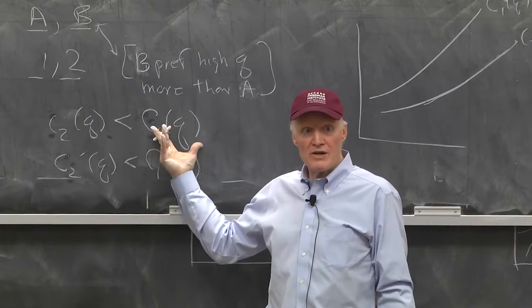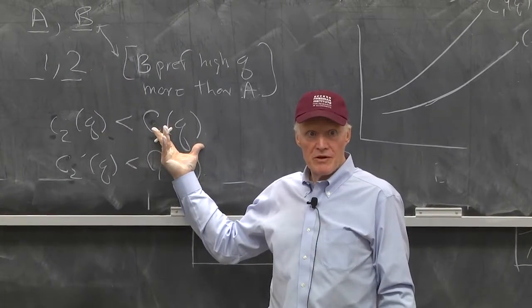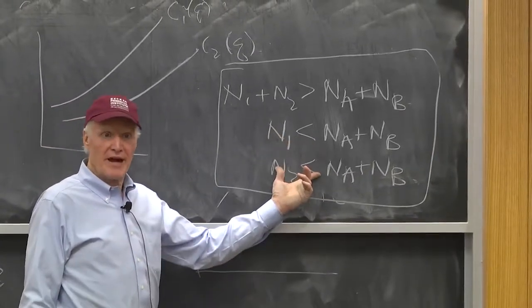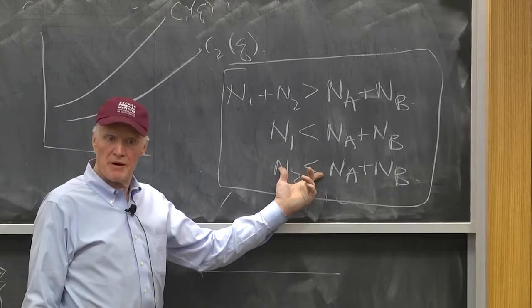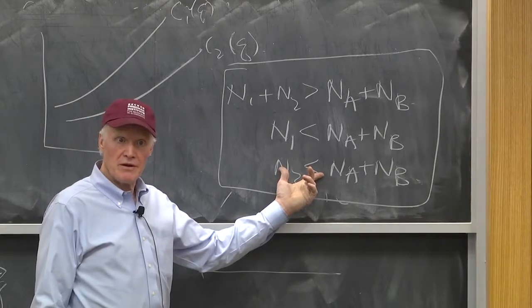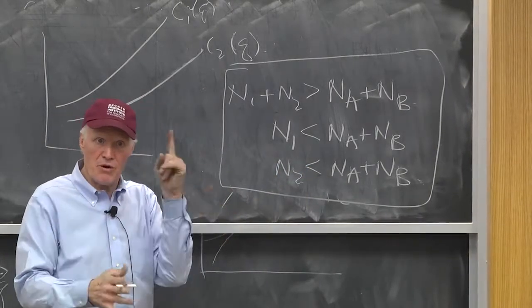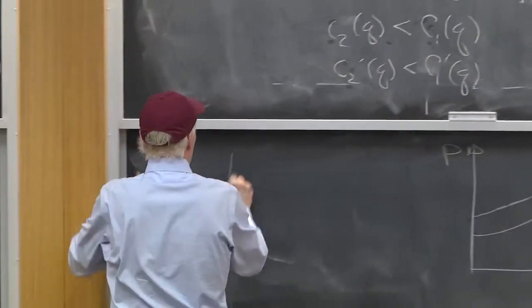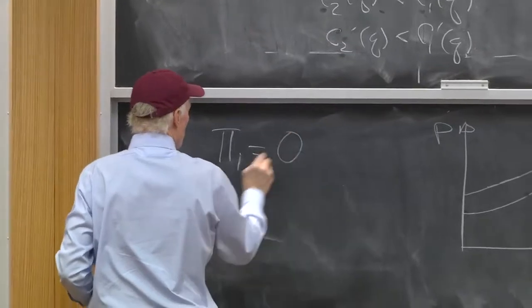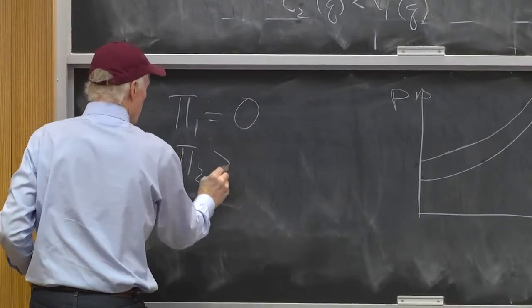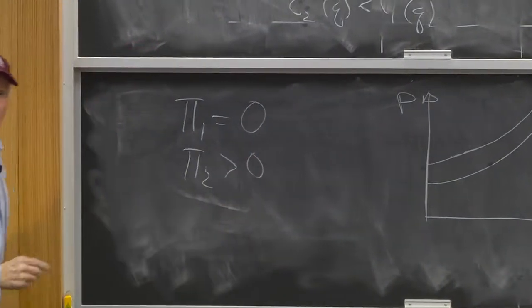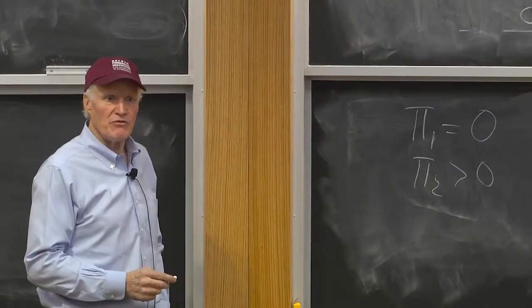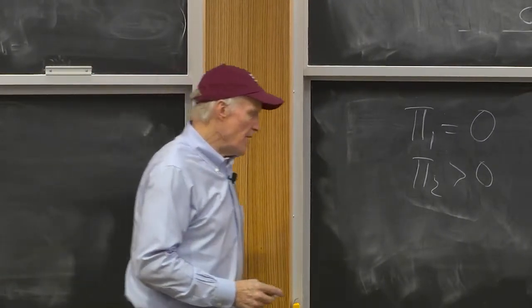This tells us both types of firms are going to have to produce in equilibrium, right? We're going to need both types. So, we're kind of narrowing down the equilibrium here. We know pi one equals zero, pi two greater than zero. We know that already. That's what we know so far.